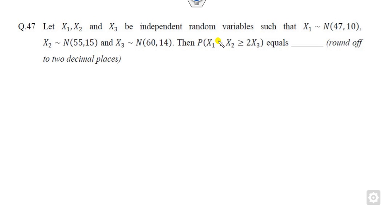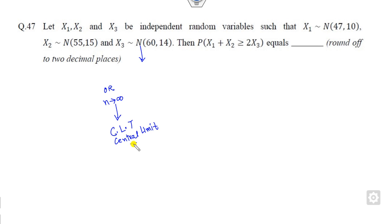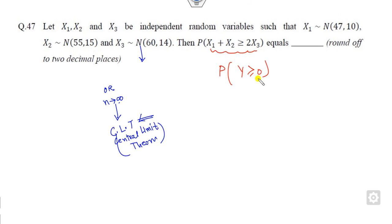Remember that whenever there is a normal distribution or whenever n approaches infinity, you always try to implement the Central Limit Theorem. I've already told you so many times in my previous videos: whenever n approaches infinity or a normal distribution is given, you apply the Central Limit Theorem. So consider Y as defined here — your target is to apply the CLT on this.